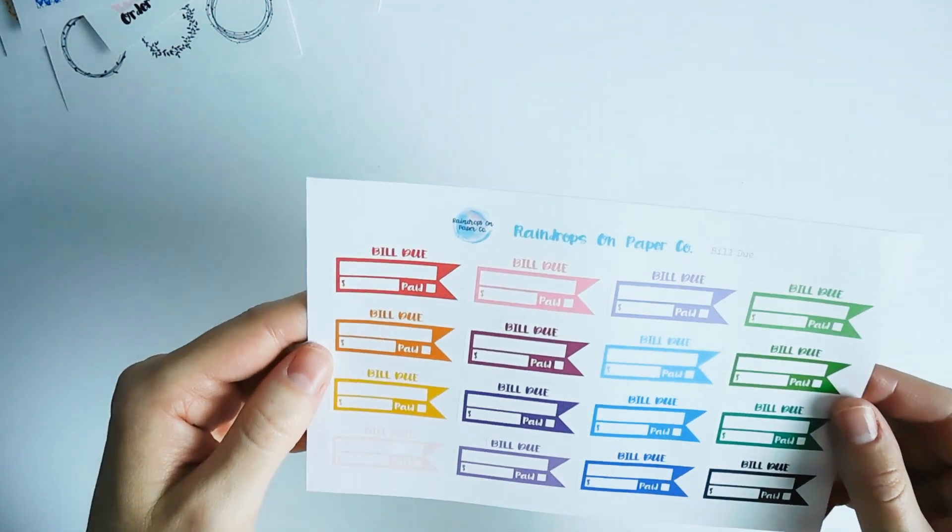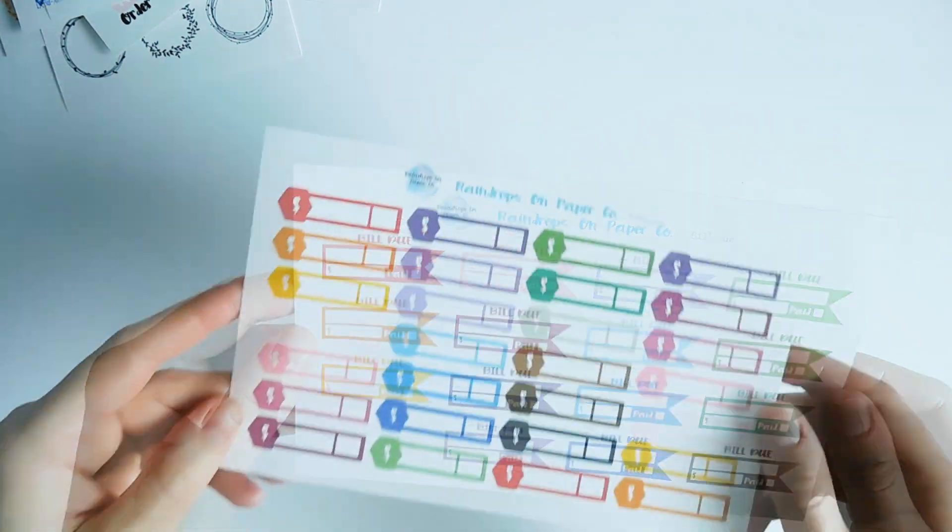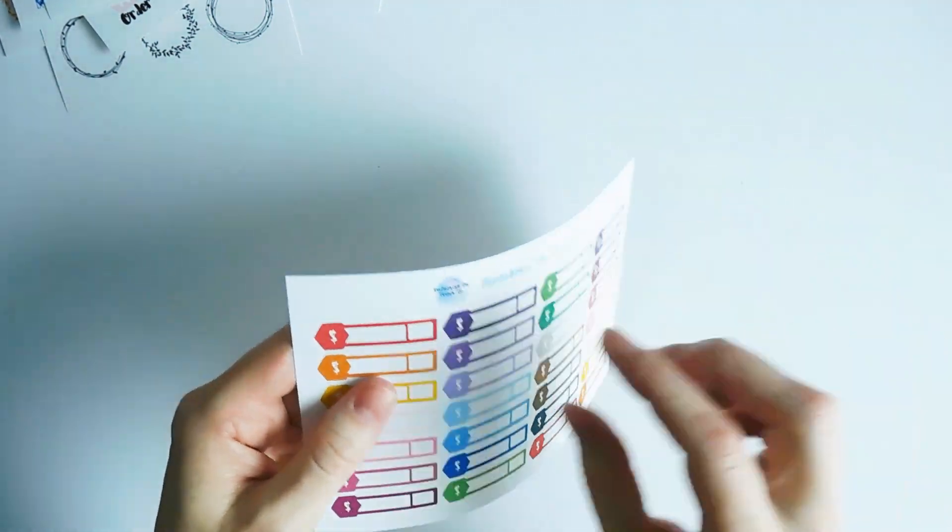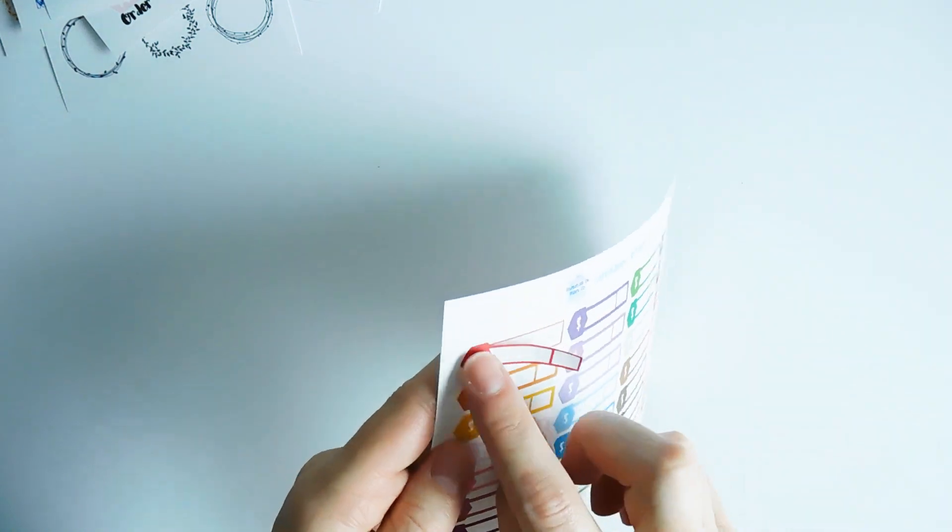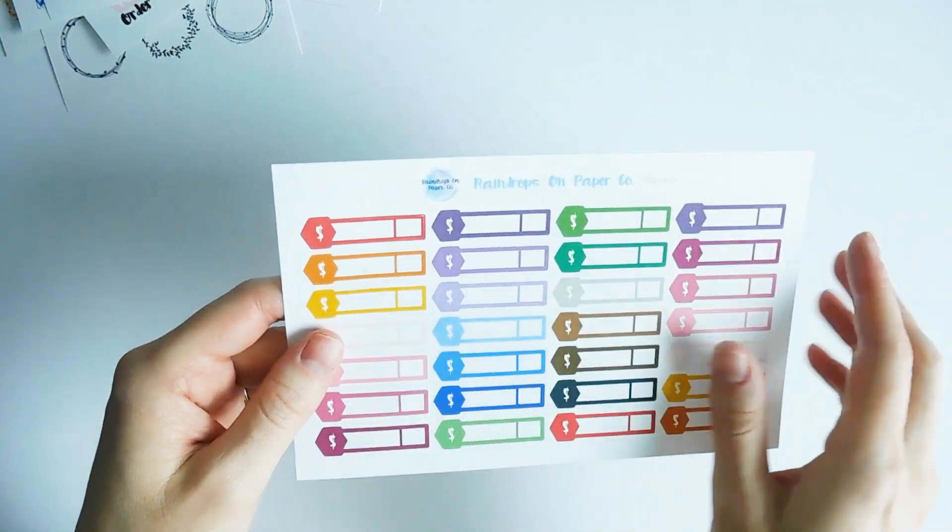And then here are the finance stickers. I just put a hexagon with a dollar sign there on the end. You can keep track of your daily spending here.